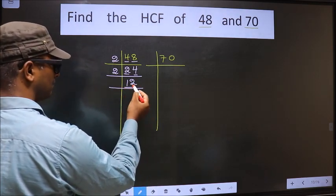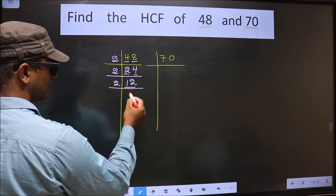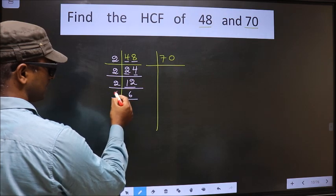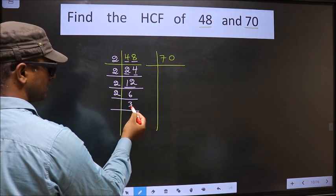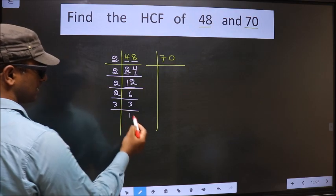Now here we have 12. 12 is 2 times 6 is 12. 6 is 2 times 3 is 6. Now 3 is the prime number, so 3 times 1 is 3.